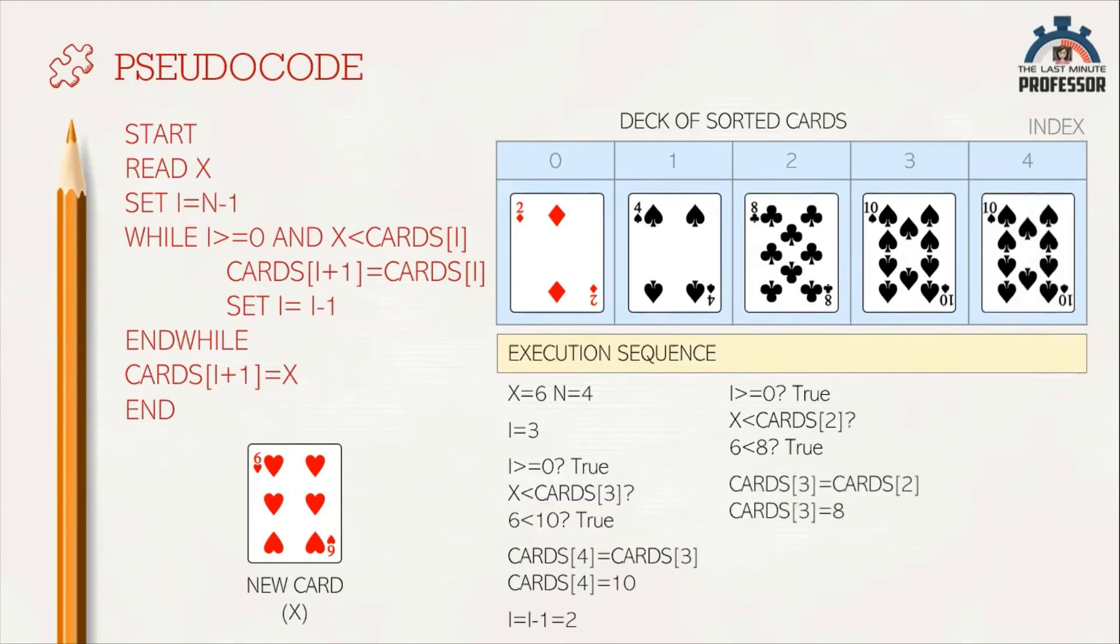That is, cards[3] equals cards[2]. That is, cards[3] equals 8. Now, decrement i value. i becomes 1.